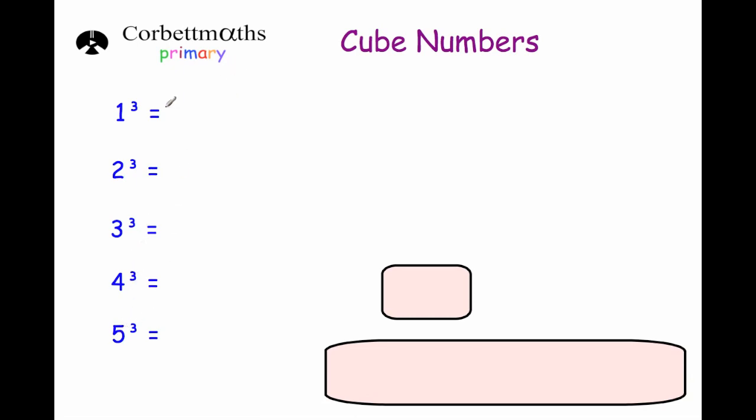And what cube means is we take the number and we multiply it by itself and by itself again. So it would mean 1 times 1 times 1. This one would mean 2 times 2 times 2. 3 cubed is 3 times 3 times 3. 4 cubed is 4 times 4 times 4. And 5 cubed is 5 times 5 times 5.